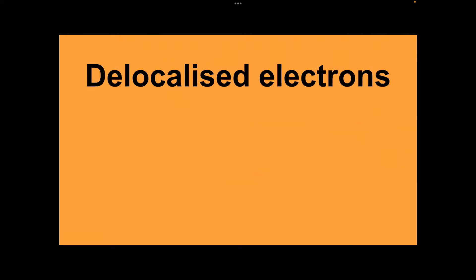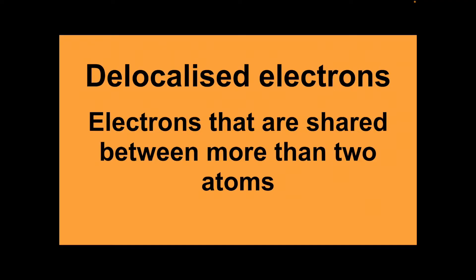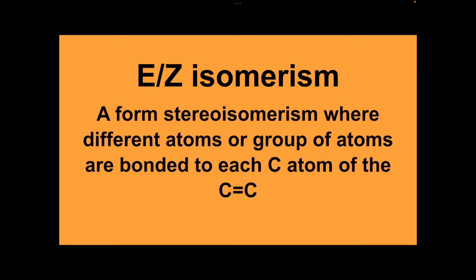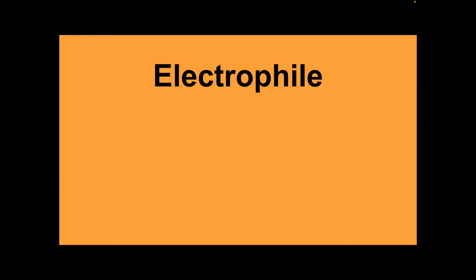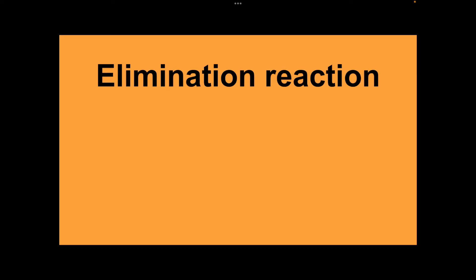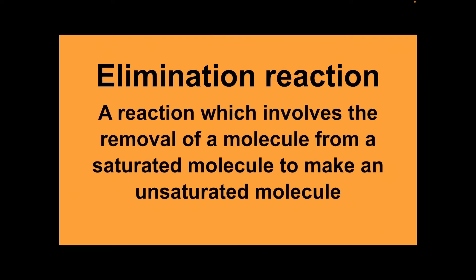Delocalised electrons: electrons that are shared between more than two atoms. EZ isomerism: a form of stereoisomerism where different atoms or groups of atoms are bonded to each carbon atom of the C=C double bond. Electrophile: an electron pair acceptor. Elimination reaction: a reaction which involves the removal of a molecule from a saturated molecule to make an unsaturated molecule.